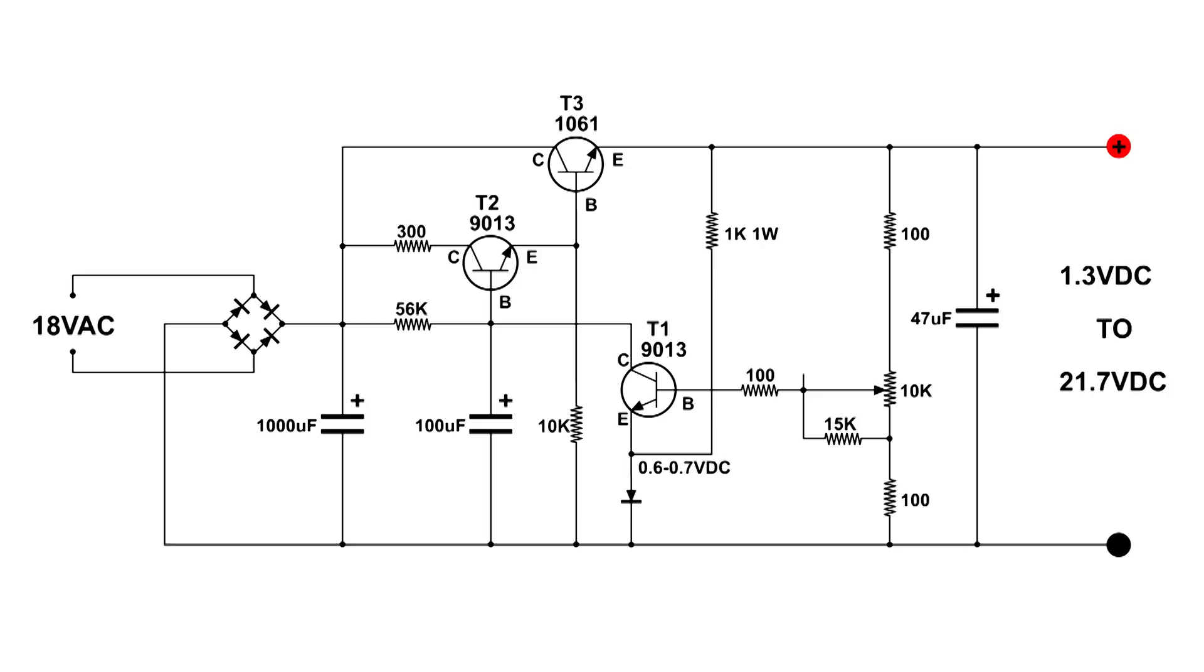The voltage on that base will also be lowered a little bit, which means that T1 will increase conduction slightly, compensating for the load. This circuit is designed in such a way that it will not oscillate. It just compensates for a load being applied to the output.